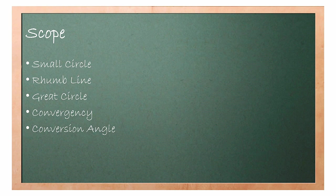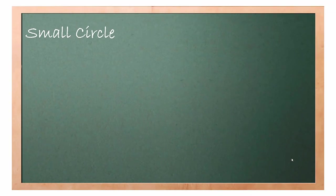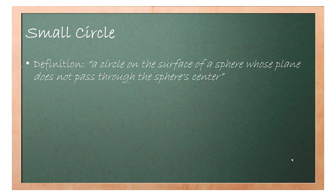The first concept we need to understand is small circle. By definition, a small circle is a circle on the surface of a sphere whose plane does not pass through the sphere's center. To better understand the definition, let me illustrate it for you.